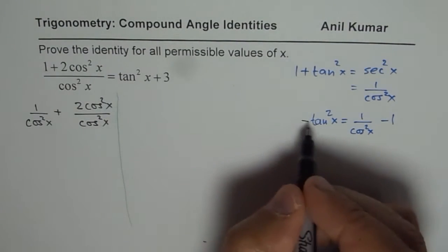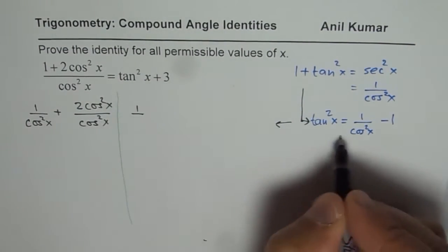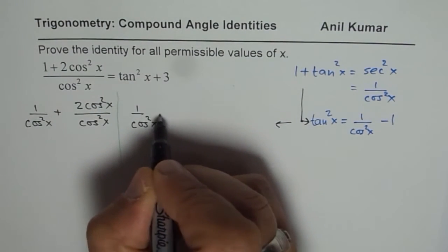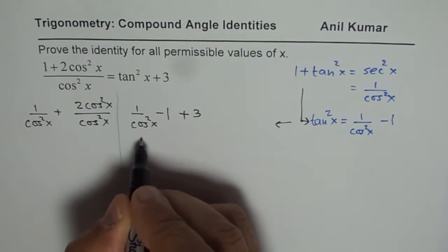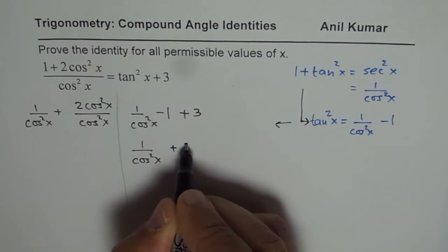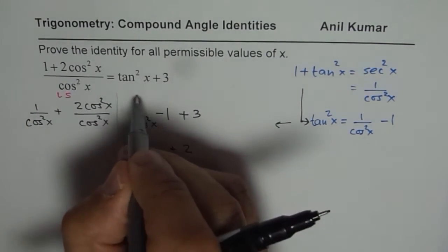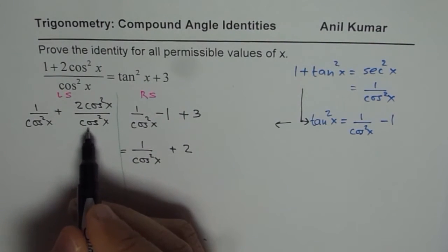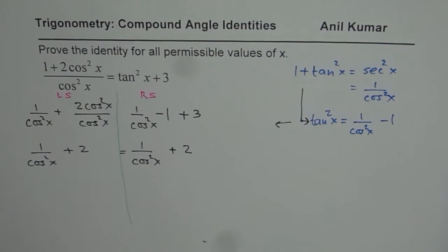Substituting, the right side becomes 1/cos²x − 1 + 3, which equals 1/cos²x + 2. On the left side, we can cancel cos²x/cos²x to get 1/cos²x + 2. Both sides are exactly the same — the identity is proved.